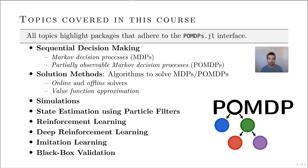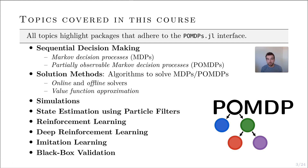The topics covered in this course highlight packages that adhere to the POMDPs interface. First we'll introduce the frameworks for sequential decision making — that includes a Markov Decision Process, or MDPs, or a Partially Observable Markov Decision Process, what we call POMDPs. We'll talk about taking these frameworks and actually solving them using solution methods or algorithms, including online and offline solvers, and how to approximate a continuous space using value function approximation.